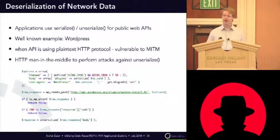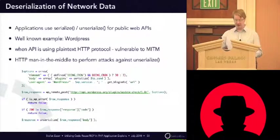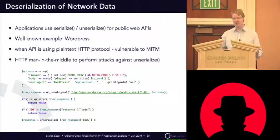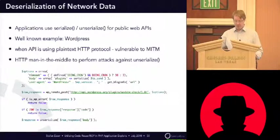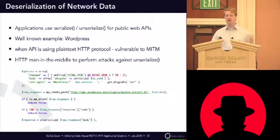The next place where you see unserialize and serialize very often is when you look at the web application programming interface — the web API. Many PHP-style web applications will provide a serialized and unserialized way to talk REST. They don't use JSON; they use serialize and unserialize. The most popular application like this is WordPress. When you have a WordPress blog, it will talk from time to time with api.wordpress.org in PHP serialized and unserialized form.